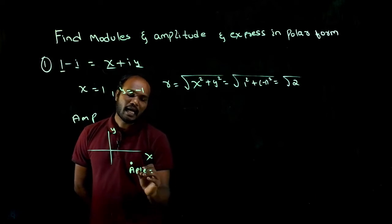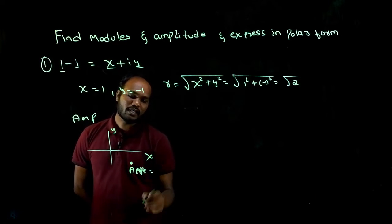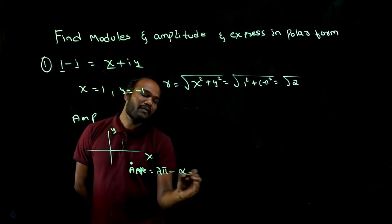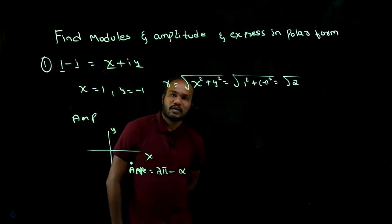In the fourth quadrant, amplitude is 2π minus α. Amplitude is 2π minus α.